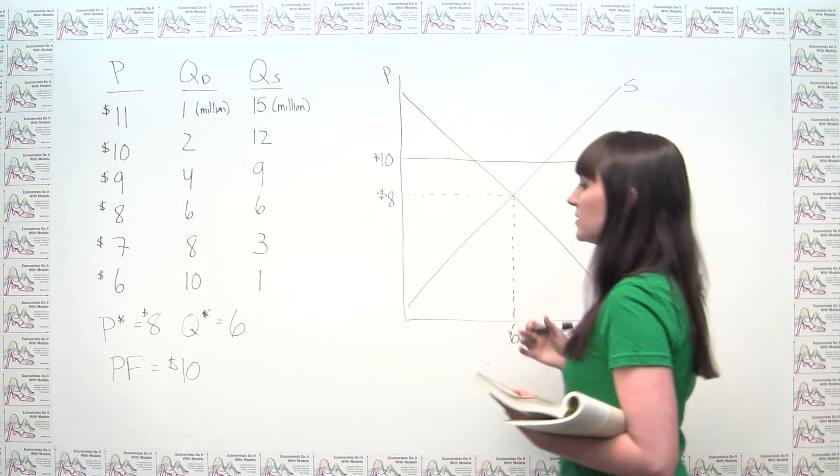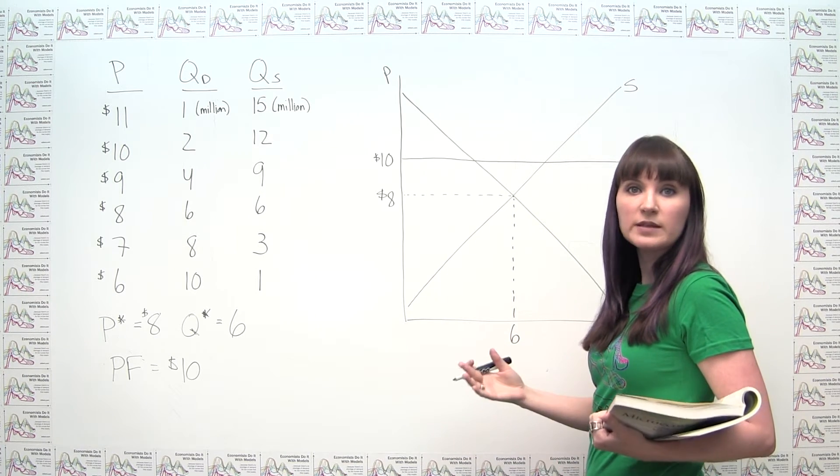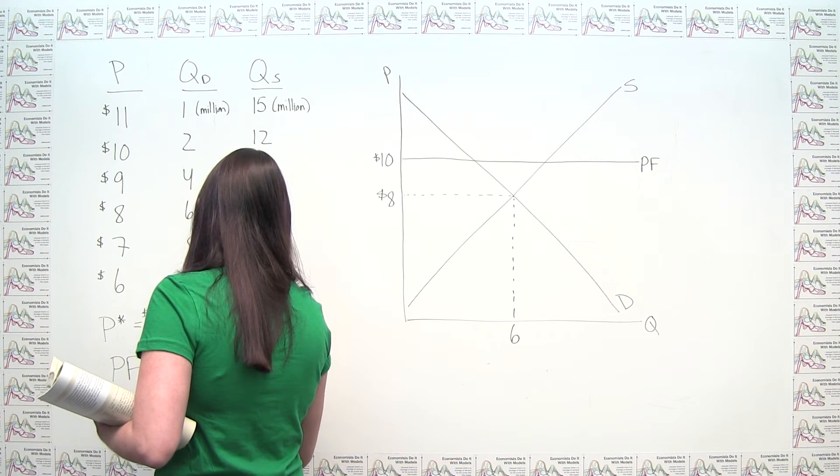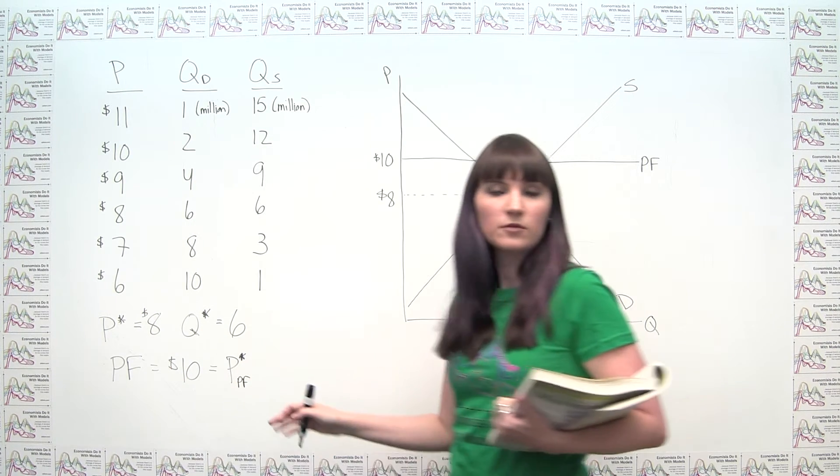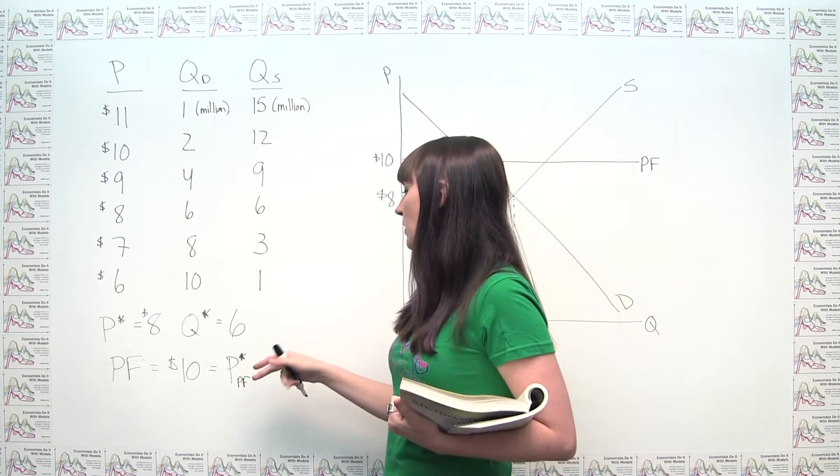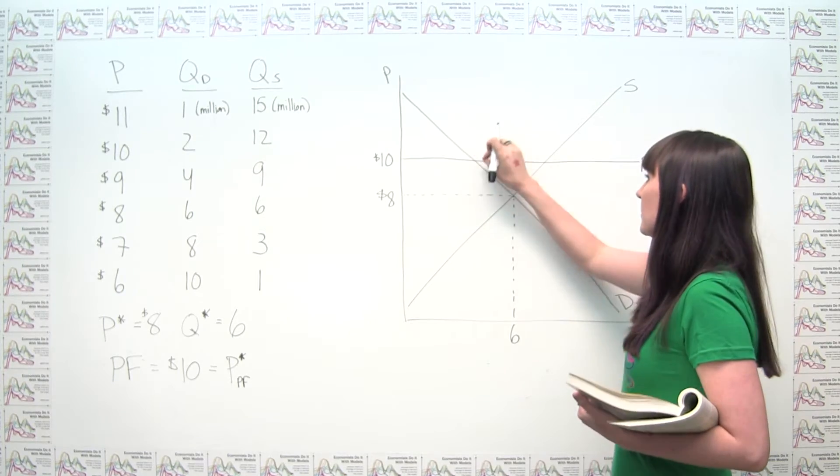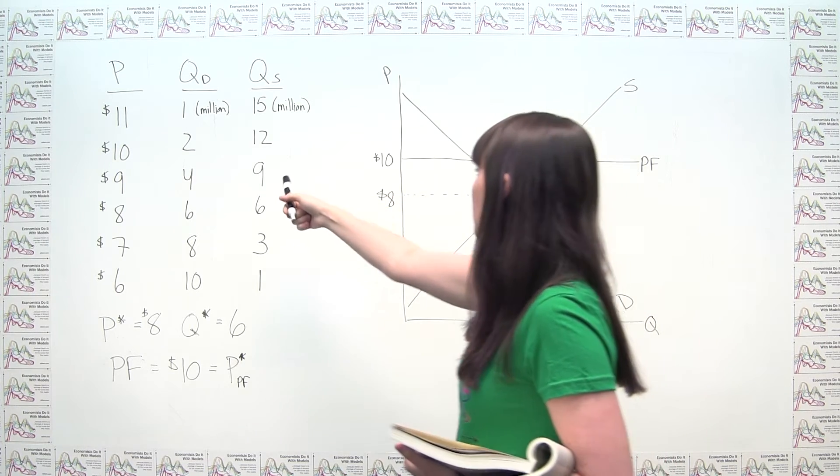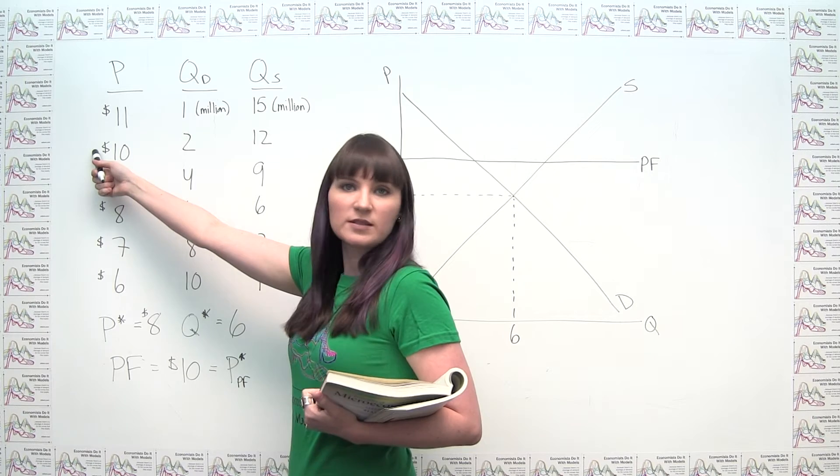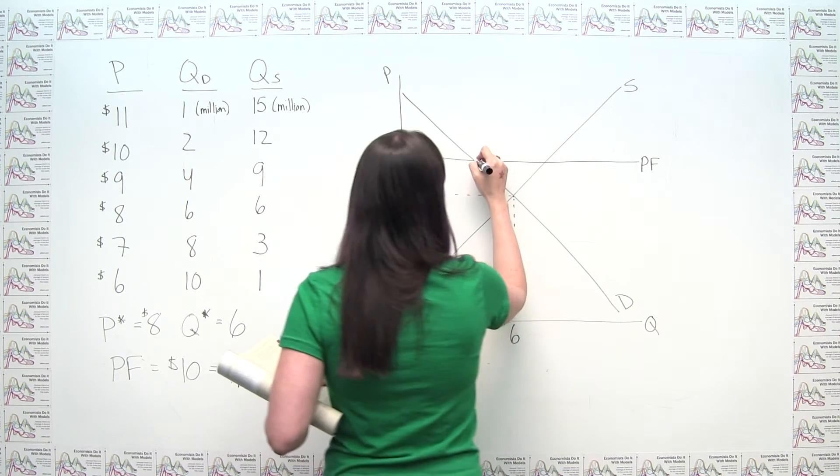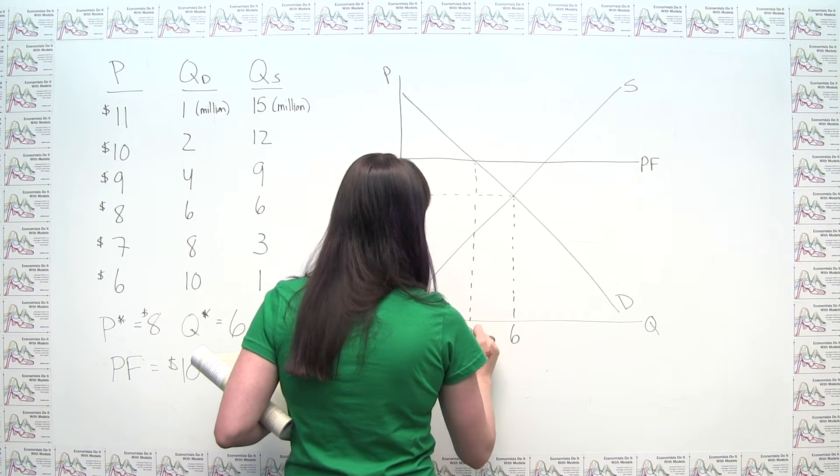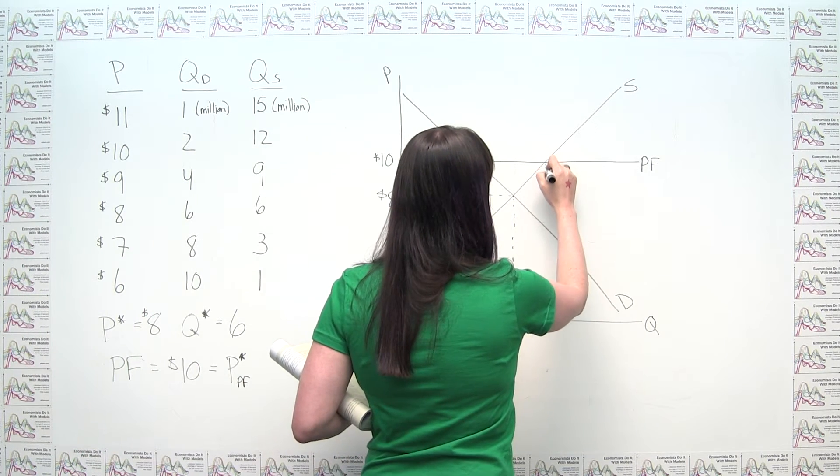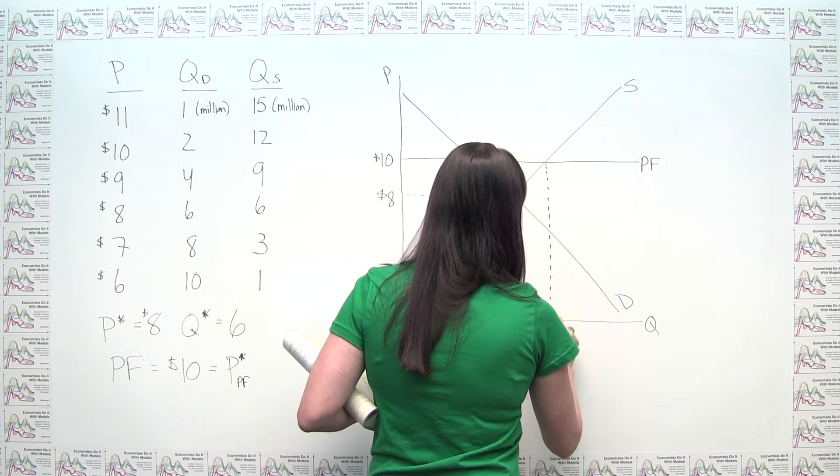So we could actually say that our equilibrium price with the price floor, when a price floor is binding, is the price that the price floor is set at. So we could say that in this case, I'll call this P star sub PF for price floor. That this is going to be an equilibrium price, but only because we've mandated that basically supply and demand are going to be out of balance in the steady state. And we could put some numbers on this. We can notice our numbers here. At a price of $10, we have a quantity demanded of 2. So I can put a 2 here. And we have a quantity supplied of 12. So notice, again, at this price, our quantity supplied is just given by the supply curve. So it must be the case that this number here is a 12.